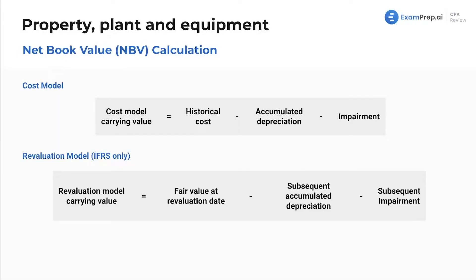Let's see some calculations for net book value. Net book value, also known as carrying value, is the current value on the balance sheet — that's the net PP&E we just saw in that example, which is our carrying amount. For any asset, the carrying value is calculated as historical cost minus accumulated depreciation, or minus allowance for doubtful accounts, minus impairment. So any reductions to its value — that's the carrying value.